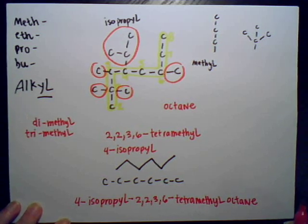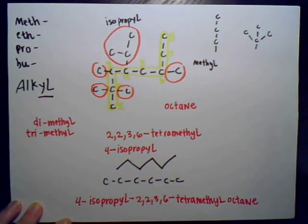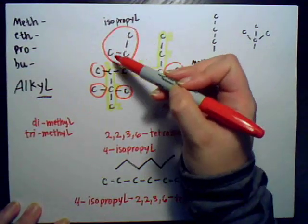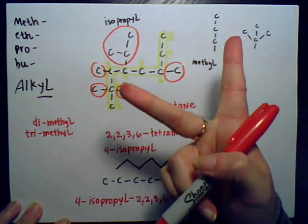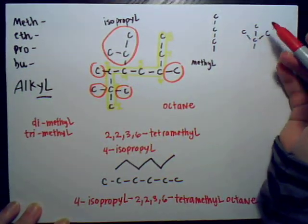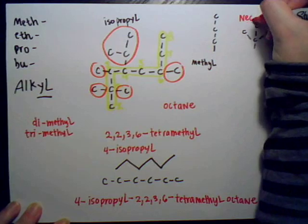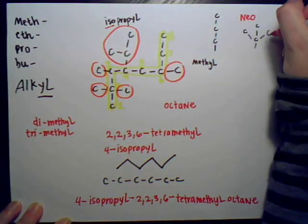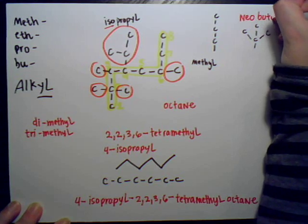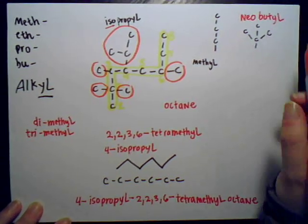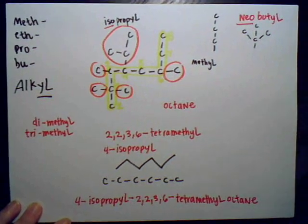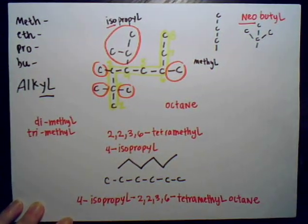Just to recap: you can have an iso group — meaning two carbons branching off — and a neo group, where there are four carbons arranged so that three branch off. For example, one, two, three, four — that would be a neobutyl group. Just like iso and neo, we can also have cyclic arrangements.